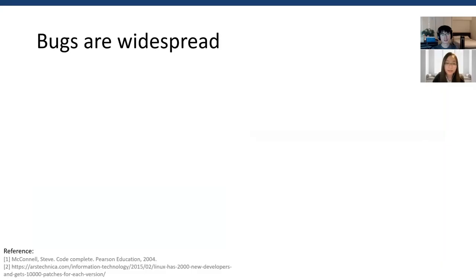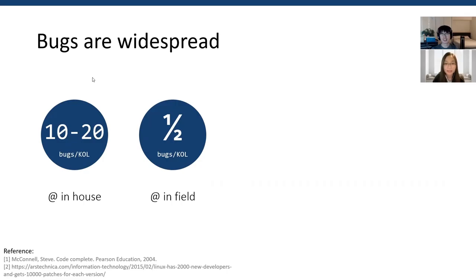Bugs are widespread in software systems. The number of bugs increases quickly as the code base size increases, which inevitably increases the burden of software development. Bugs appear both in in-house testing and release code. Take Microsoft applications as an example: it has 10 to 20 bugs per thousand lines of code during in-house testing. However, even with thorough testing, bugs still remain in release products, reduced to half bugs per thousand lines of code.